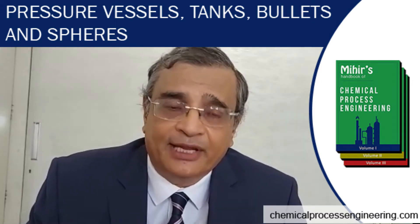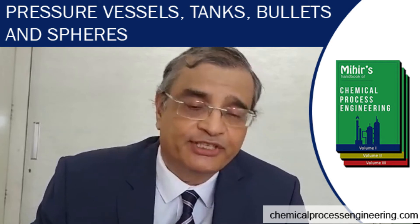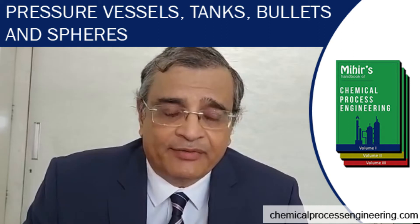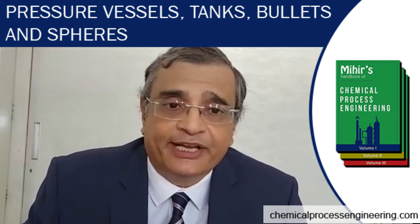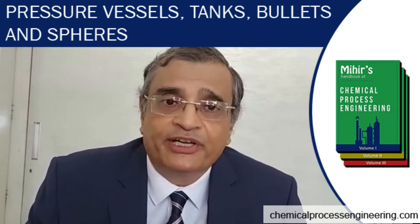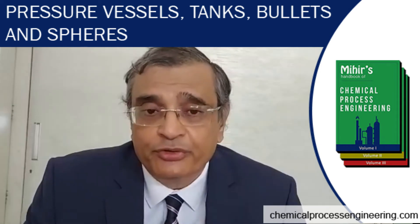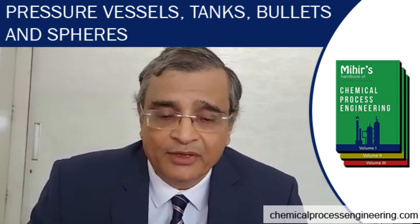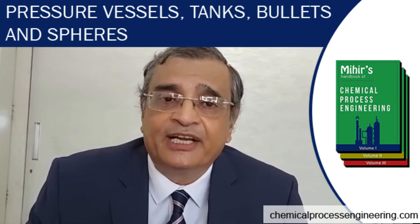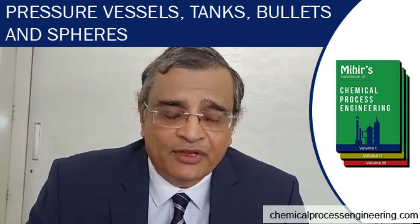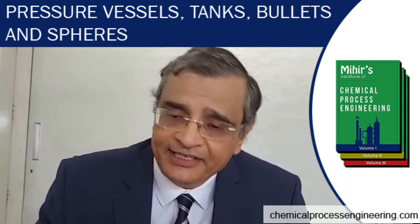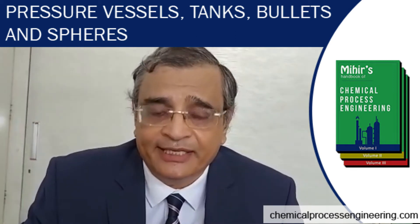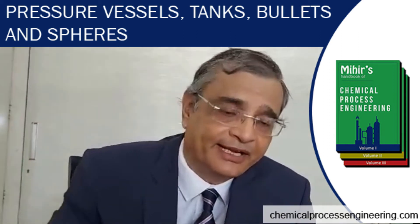Depending on the chemical, the type of storage tank is decided by the process engineer. For example, crude oil can be stored in an external floating roof tank. Whereas benzene, because it is a carcinogen, is stored in a fixed conical roof tank with an internal floating roof. You also have to have nitrogen blanketing if benzene is the chemical being stored.